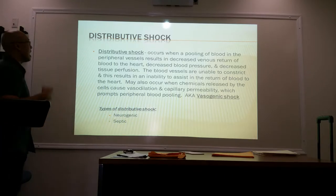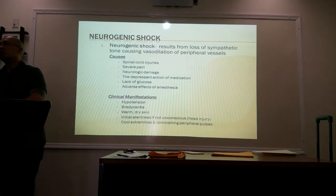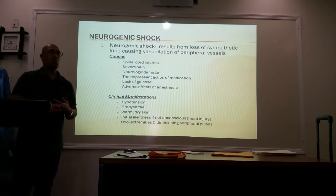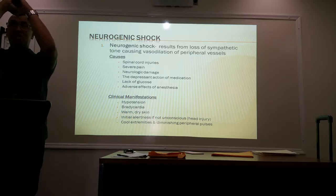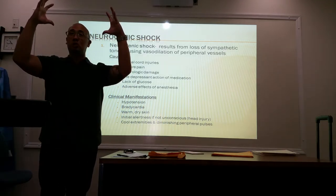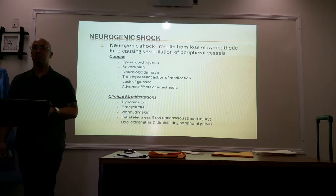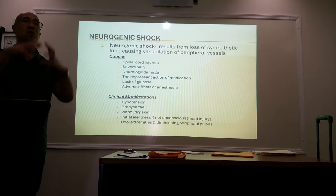The two types of distributive shock we're going to talk about are neurogenic and septic. Neurogenic shock results from the loss of sympathetic tone causing vasodilation of peripheral vessels. Your vessels become vasodilated — they remain wide open. We want vasoconstriction to squeeze blood back into the heart, but in neurogenic shock there isn't enough constriction. This can be caused by spinal cord injuries, where there's a lack of communication between your brain and your vessels, keeping them dilated.